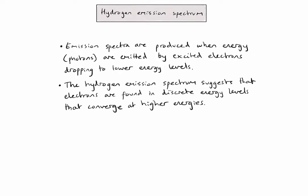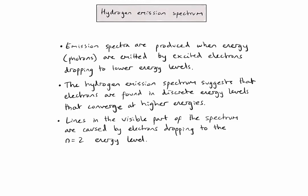Thirdly, lines in the visible part of the spectrum are caused by electrons dropping to the n equals 2 or second energy level. Any drops to the first energy level would be seen in the UV part of the spectrum, and drops to the third energy level would be seen in the infrared part of the spectrum.